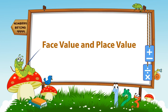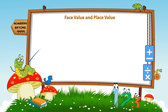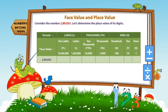Face value and place value. We know that the face value of a digit is the value of the digit itself, while the place value of a digit depends on its face value and its place or position in a number.